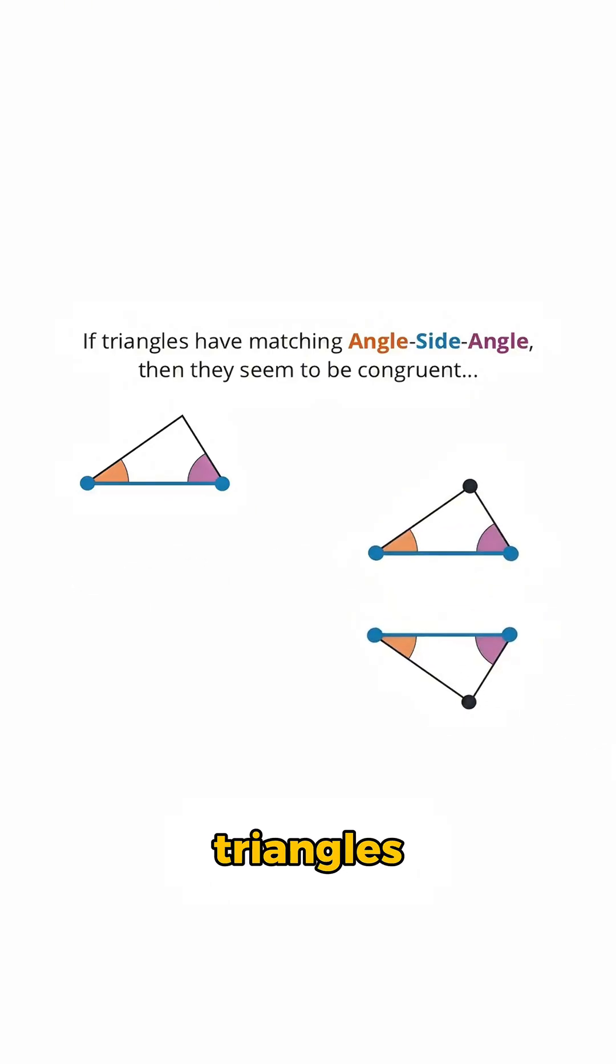So we created two new triangles with matching angle-side-angle to our original triangle. But are these new triangles congruent to the original?